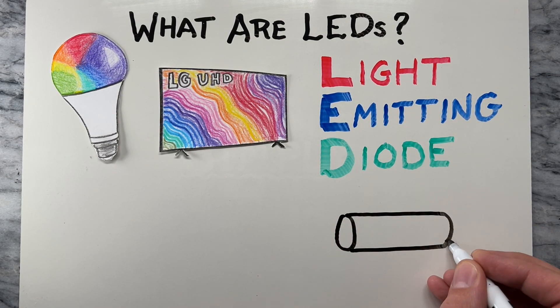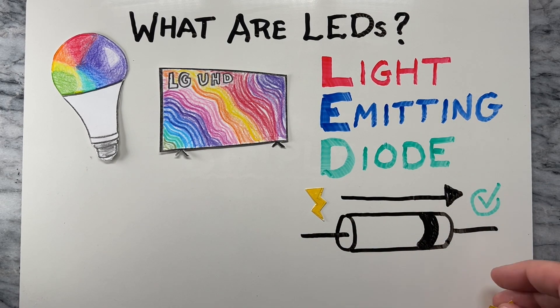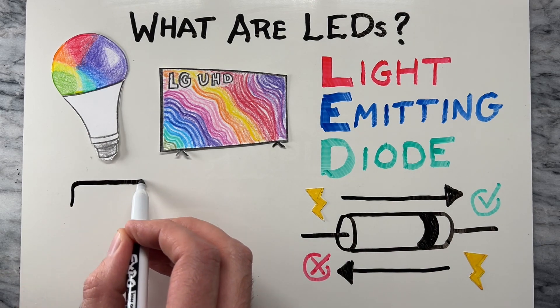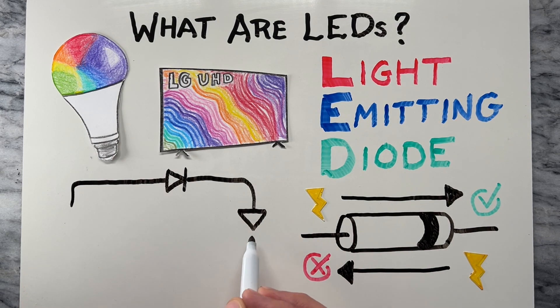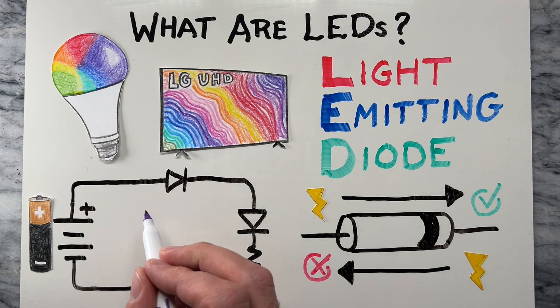A diode is like a one-way valve for electricity. It allows electric current to flow in one direction, but blocks it from flowing the other way. It's a tiny electronic component that helps control the flow of electricity in circuits, making it a key part of many electronic devices.